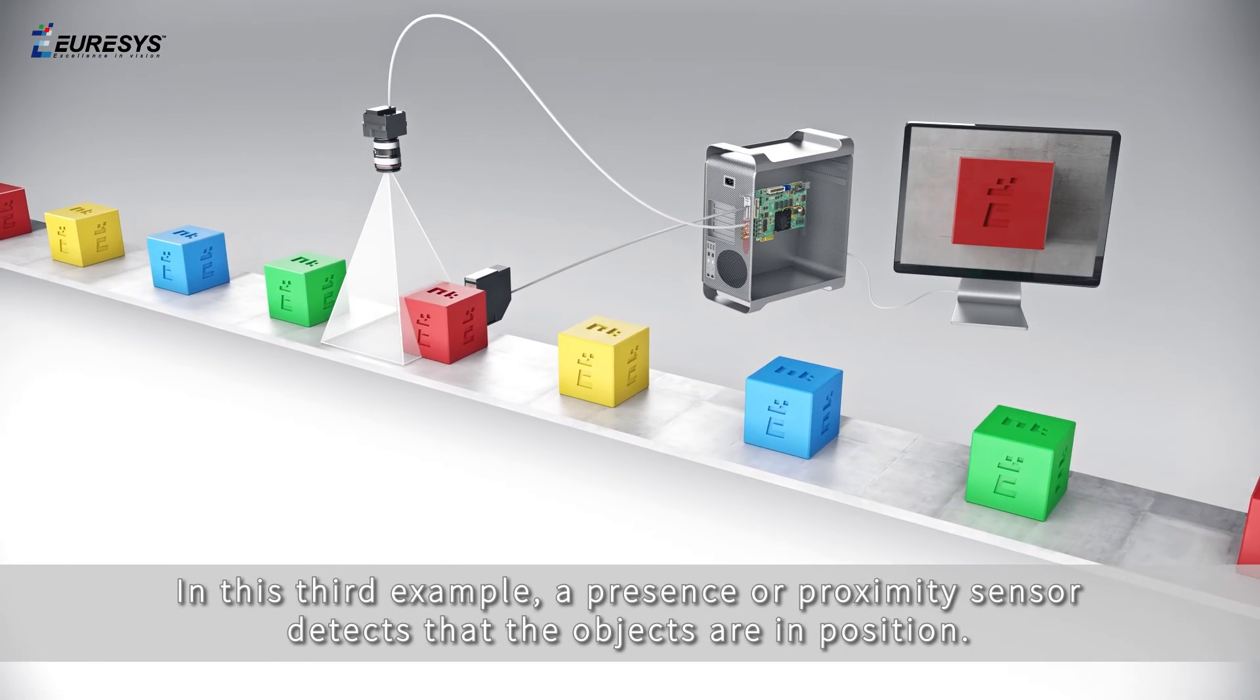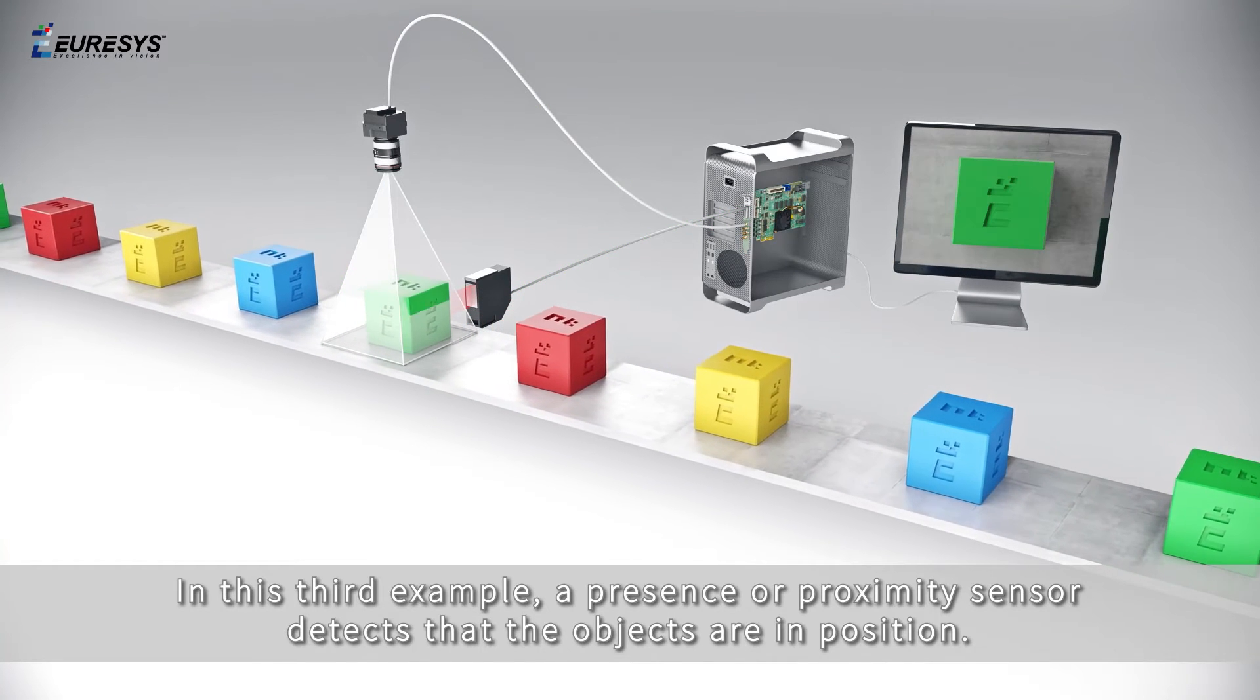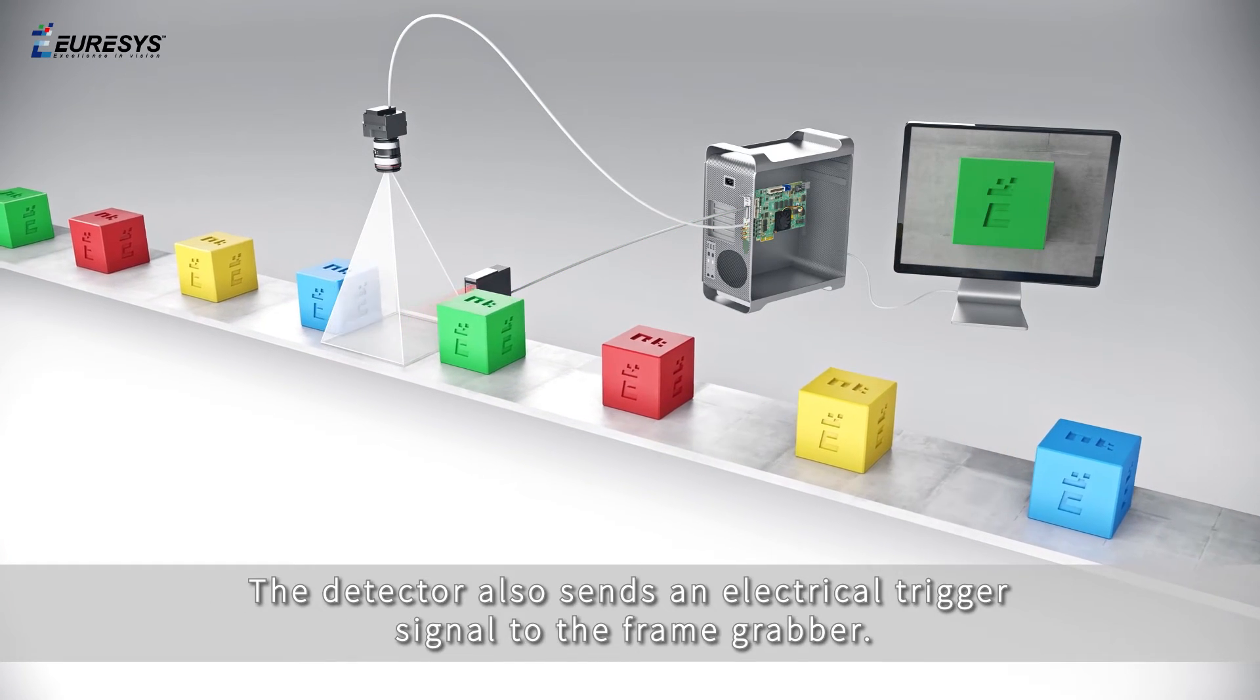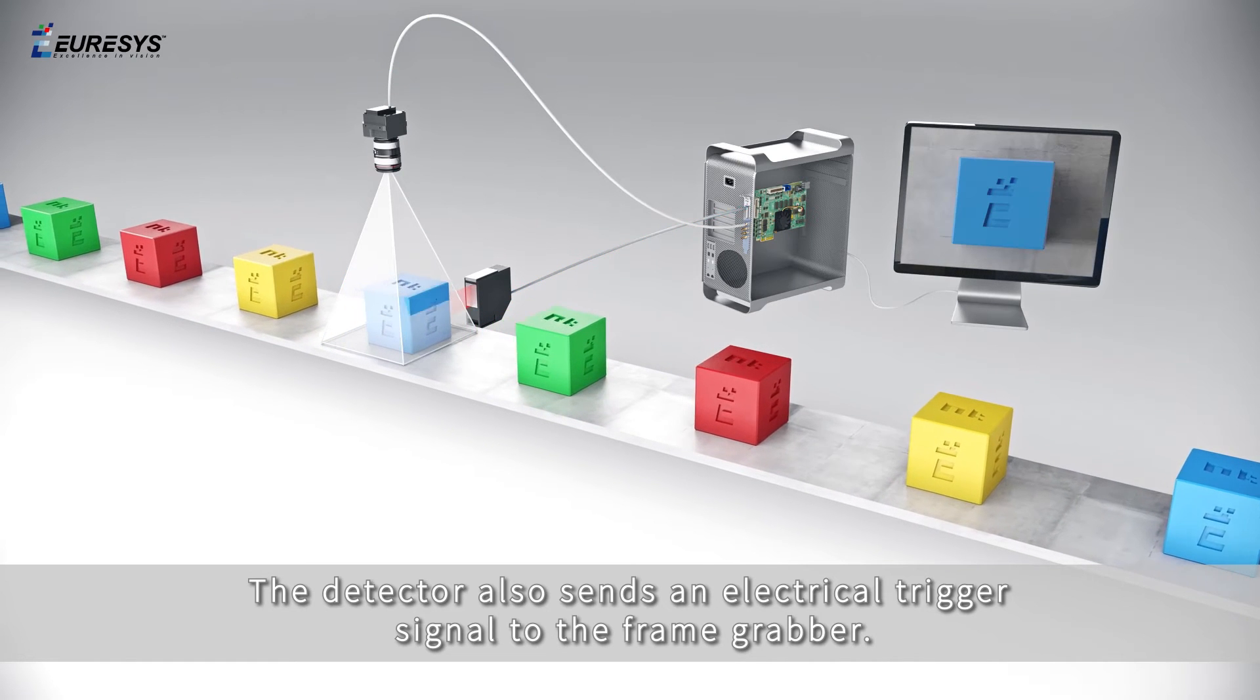In this third example, a presence or proximity sensor detects that the objects are in position. The detector also sends an electrical trigger signal to the frame grabber.